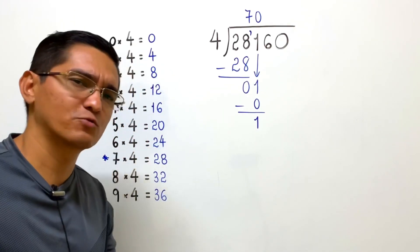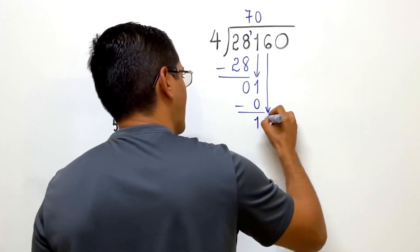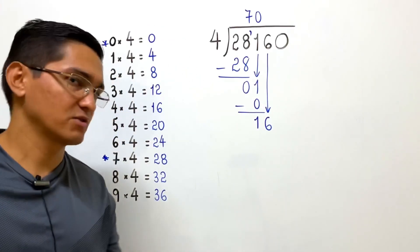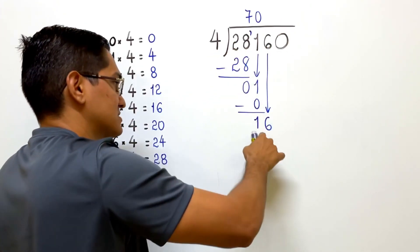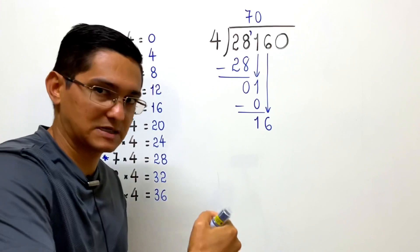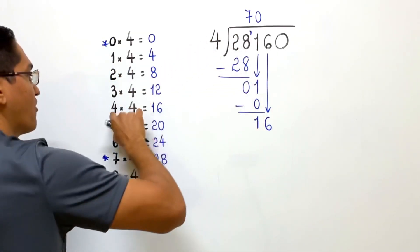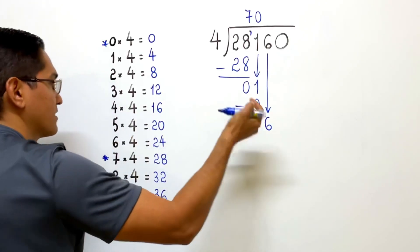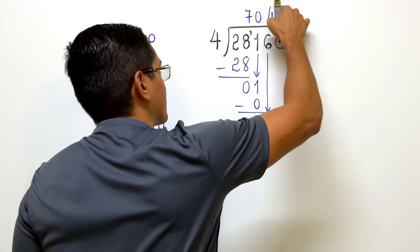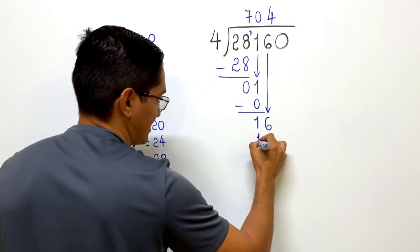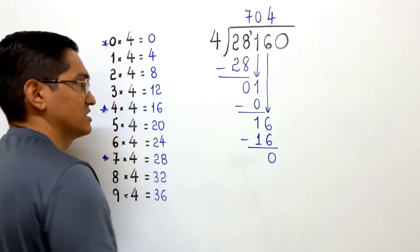After a subtraction, what do we do? We bring down the next digit, which is 6 now. And now we have 16 here. And we ask the question, what number do I multiply by 4 to get 16 or almost 16, but not more than 16? We see here that 4 times 4 equals 16. So we use 4 now. I write 4 here. 4 times 4 is 16. I write it here. And then I subtract 16 minus 16 equals 0.